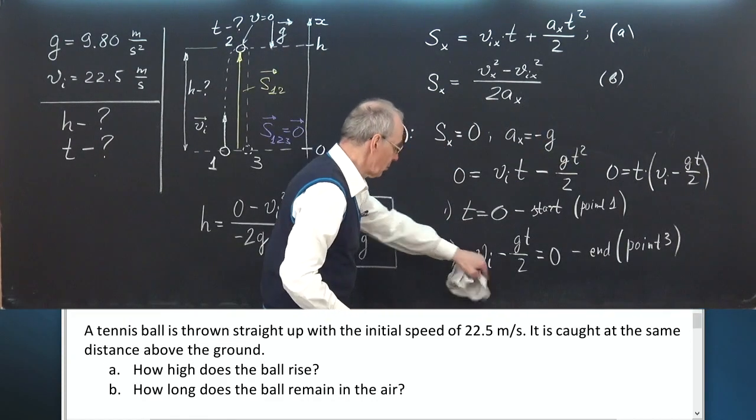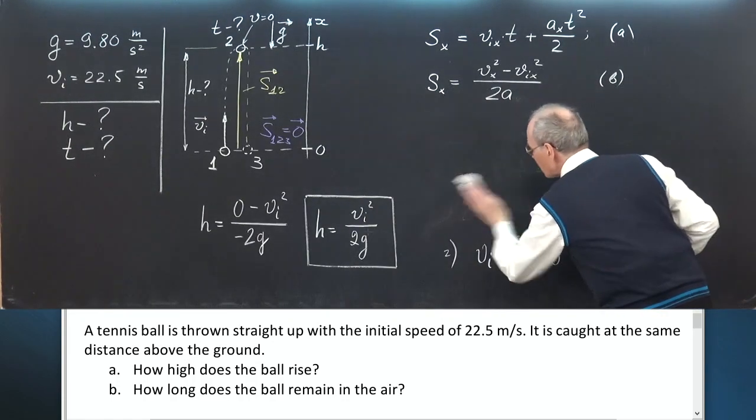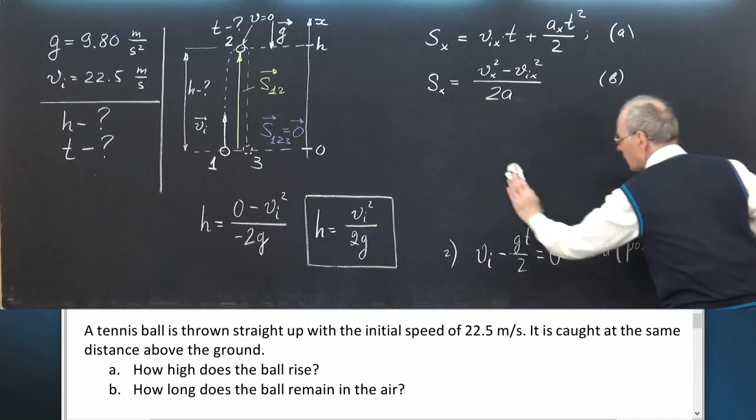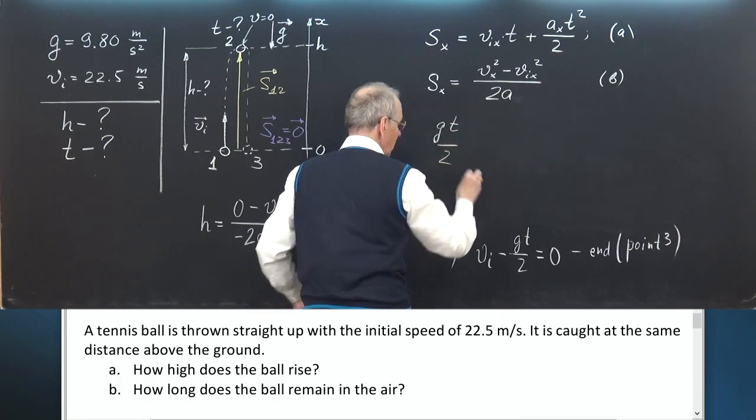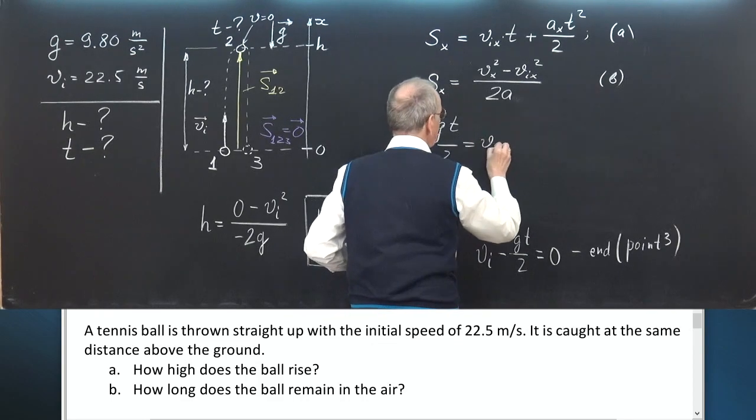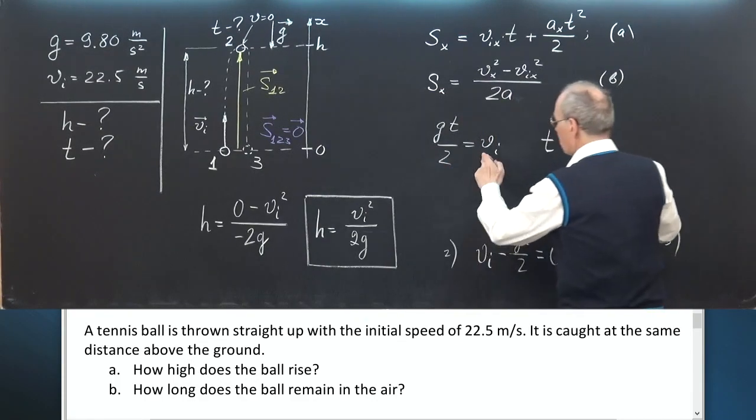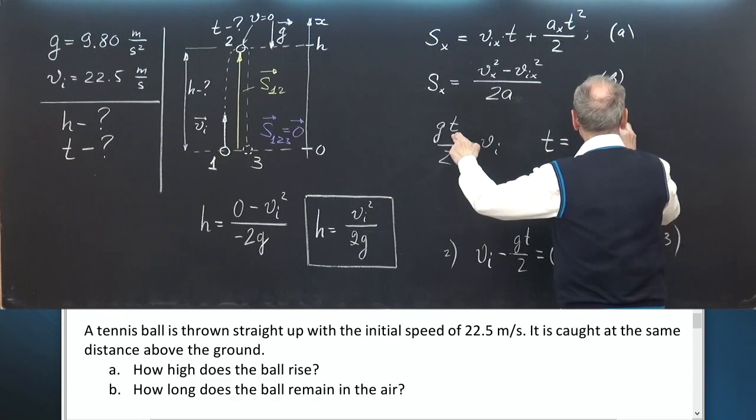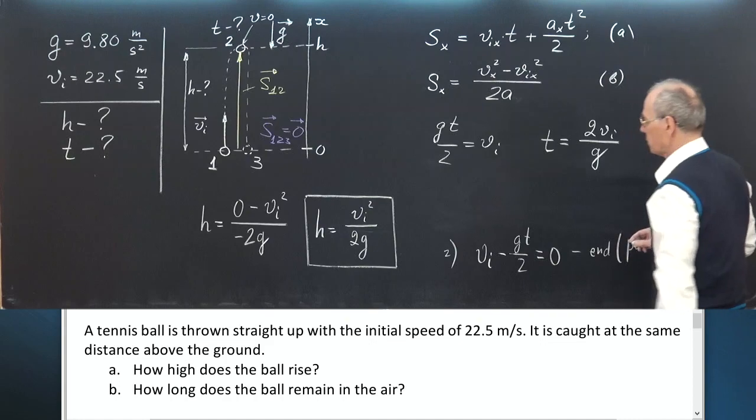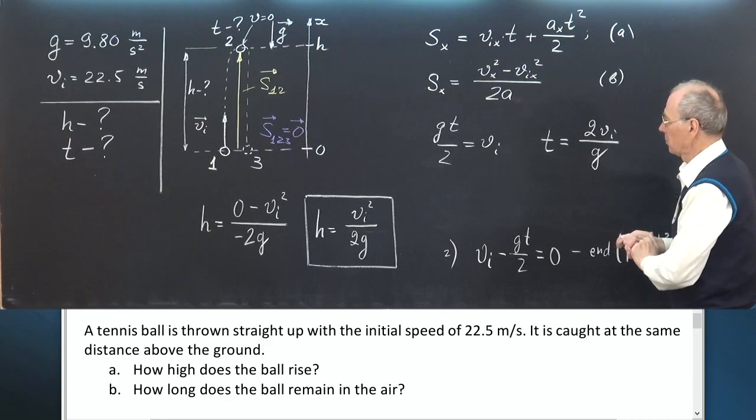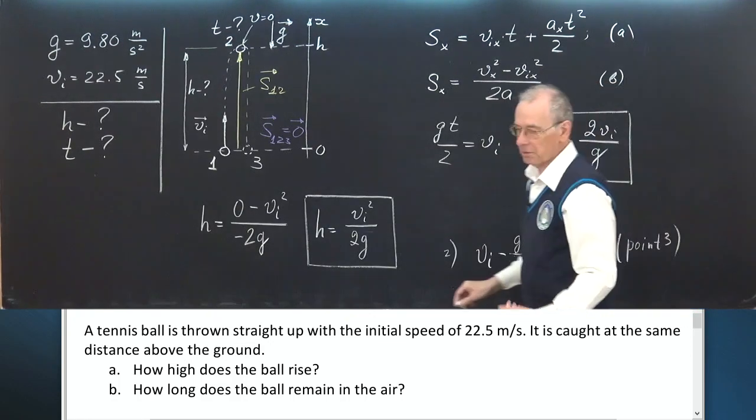Let's use this formula. So, you can see GT over 2 equals V initial. Hence, T equals twice initial speed over free fall acceleration. The answer to the second question.